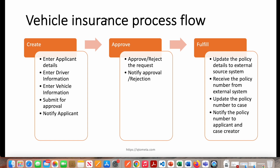The stages are: Create, Approve, and Fulfill. In the Create stage, we'll enter applicant details — whoever is applying for insurance. Then we'll enter driver information, because that is also mandatory. The driver details matter for pricing: if a beginner is driving, the cost of insurance will be high; if an experienced driver is driving, the cost will be low. If you've been driving for the last 10 years, the cost will be lower.